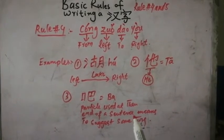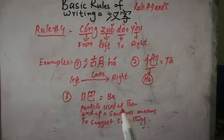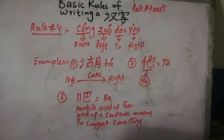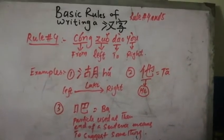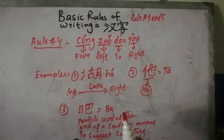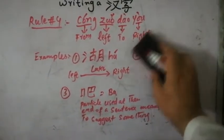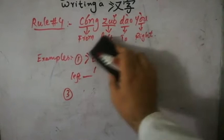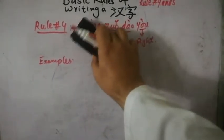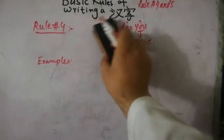So this is about rule number four. Now I hope that you will have learned this very well, that we should write a Chinese character from left to right. Now let's discuss rule number five.